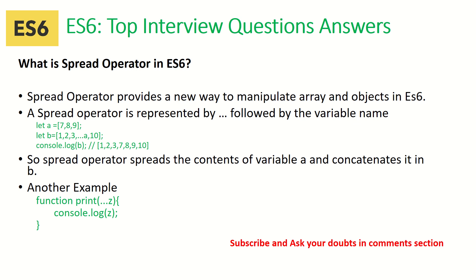Another use of the spread operator is when you don't know how many parameters you are passing. When you define a function, you normally need to specify how many parameters it takes. But with dot-dot-dot, it means it can be any number of parameters — one, two, or n number. That's an advantage we get. If you don't understand this concept, let me know and I can provide more examples.